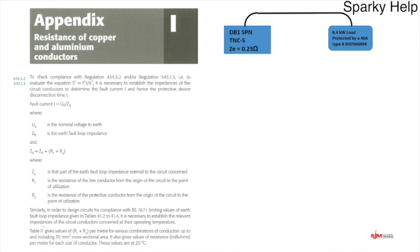Using the on-site guide, we go to Appendix I — resistance of copper and aluminium conductors. You'll see a formula at the top including the adiabatic equation. There's also an Ohm's law formula working at fault current based on UO and ZS. Importantly, we have ZS equals ZE plus R1 and R2, where R1 and R2 in brackets represent your circuit installation.